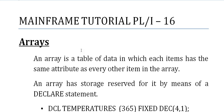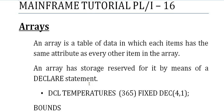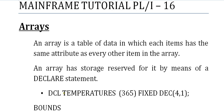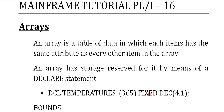Based on this Array, we have different dimensions of Arrays. An Array is a table of data in which each item has the same attribute as every other item in the Array, and an Array has storage reserved for it by means of declared statements. For example, declaring: DCL temperature with an index of 365 and the data type is fixed. So you have declared an array of temperature of 365 — 365 indices — and the data type is fixed.